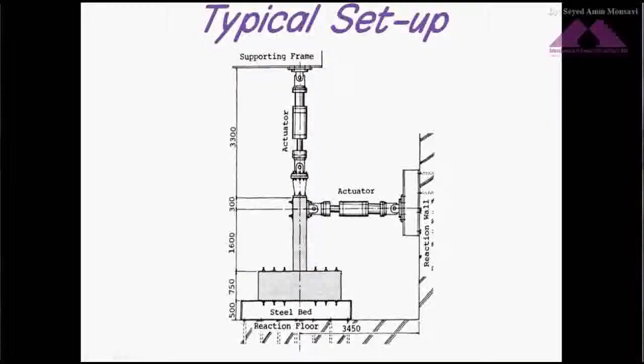In most cases, before the lateral load, a constant axial load would be applied at the top of the column to simulate its gravity load. Some researchers use force control mode at the early stage of the test before yielding or cracking of the column.